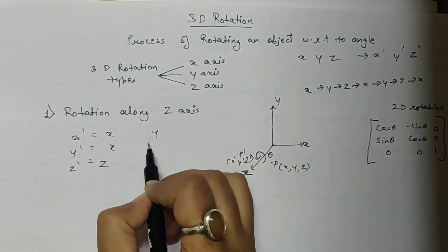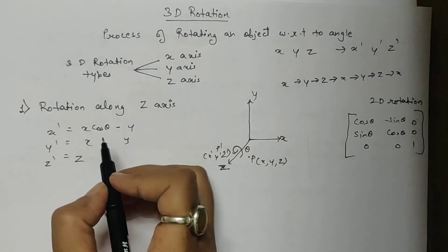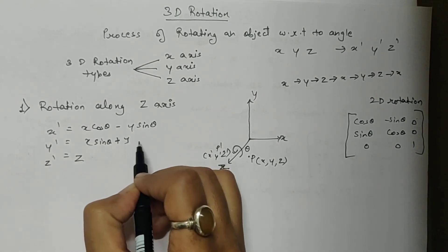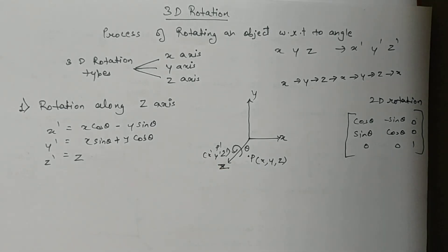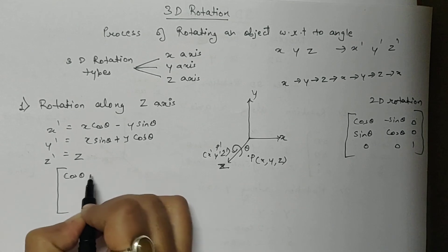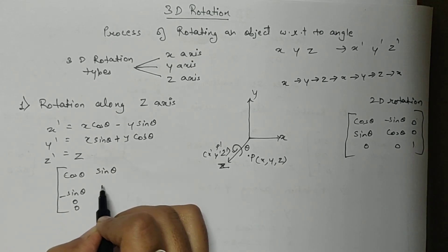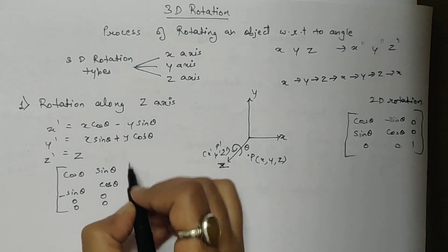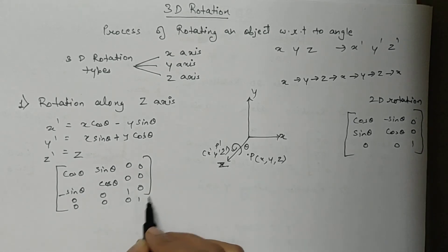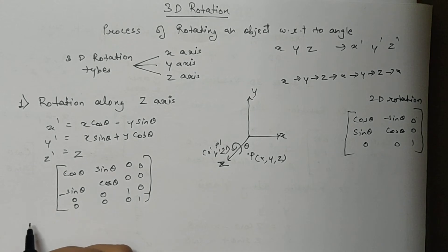So the formula becomes: x dash equals x cos theta minus y sine theta, and y dash equals x sine theta plus y cos theta. This is my formula for calculating rotation along z axis. In matrix form it will be: cos theta, minus sine theta, 0, 0 / sine theta, cos theta, 0, 0 / 0, 0, 1, 0 / 0, 0, 0, 1 — where the z row has 1 since z remains unchanged, and the last row is the homogeneous coordinate.